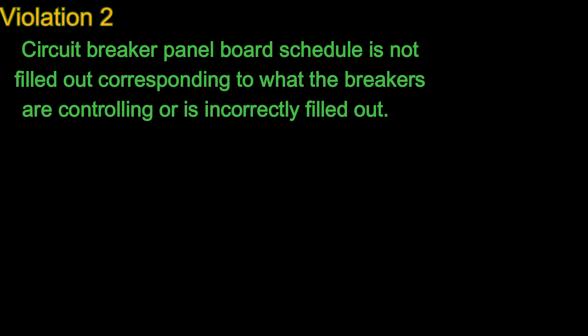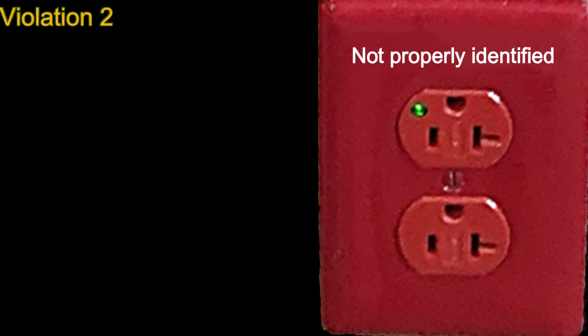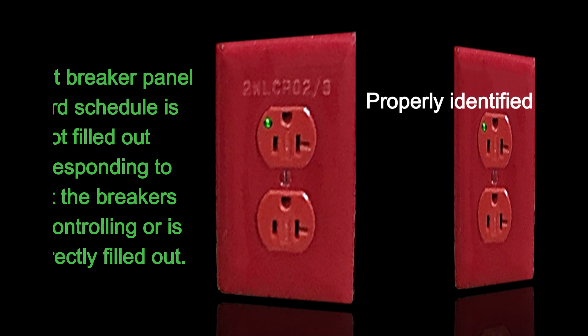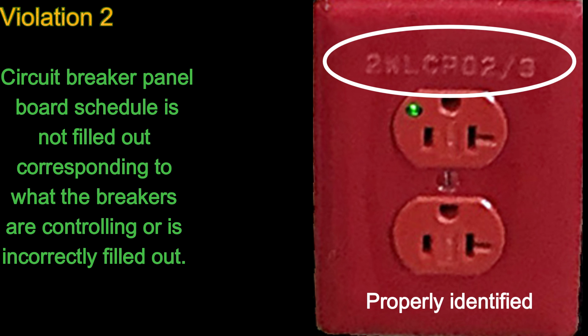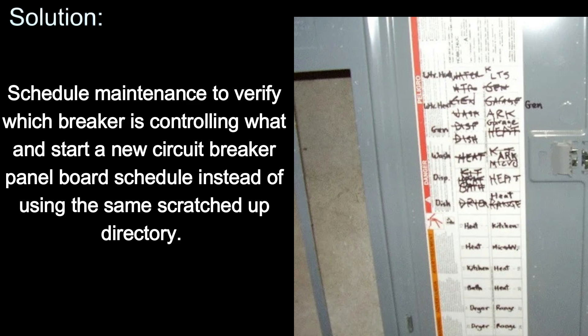Number 2: Circuit breaker panel board schedule is not filled out corresponding to what the breakers are controlling, or is incorrectly filled out. Code NFPA 70 408.4, field identification required, states every circuit and circuit modification shall be legibly identified as to its clear, evident, and specific purpose or use, located on the face or placed inside of the panel door. Solution: Schedule maintenance to verify which breaker is controlling what, and start a new circuit breaker panel board schedule instead of using the same scratched-up directory.